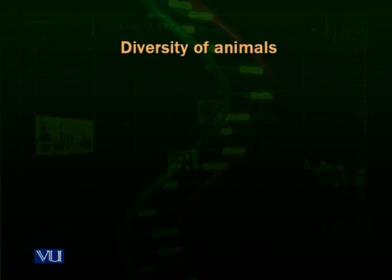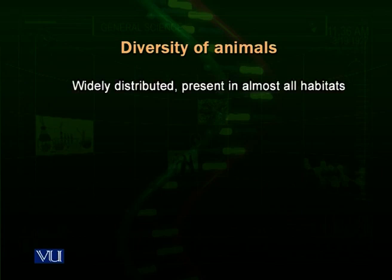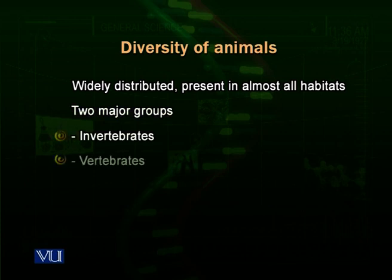Now we talk about the diversity of animals. Animals are present in diversified habitats — they are present almost everywhere and are widely distributed. There are two major groups of animals called invertebrates and vertebrates. All animals are categorized in either invertebrates or vertebrates. Invertebrates are organisms that do not have a vertebral column, while vertebrates are the animals that do have a vertebral column and their nerve cord — the nervous system — runs in that vertebral column.